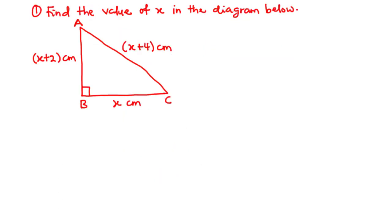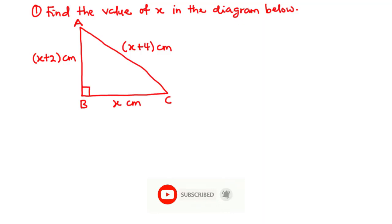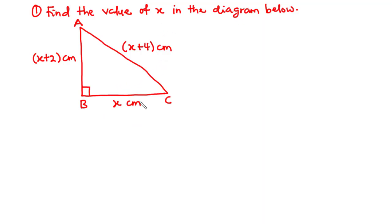Using this information, let's try to solve a few examples. Example one: find the value of x in the diagram below. In this diagram we have a right-angled triangle where AB is (x + 2) centimeters, AC is (x + 4) centimeters, and BC is x centimeters. We are going to use the Pythagorean theorem to find the value of x.